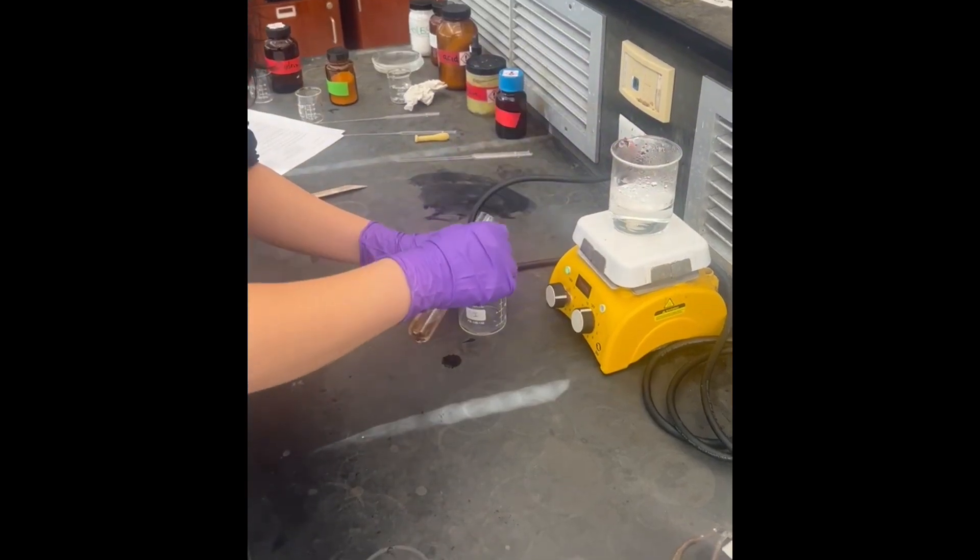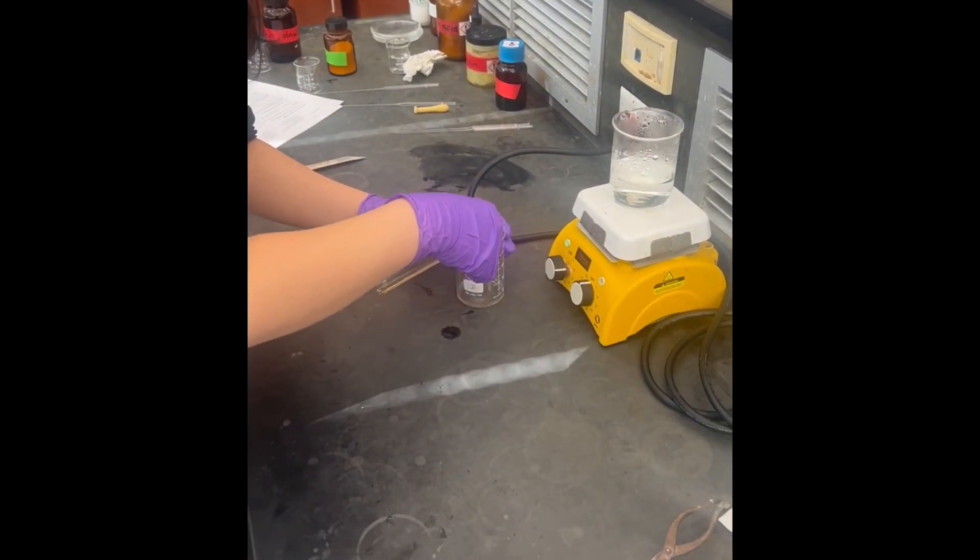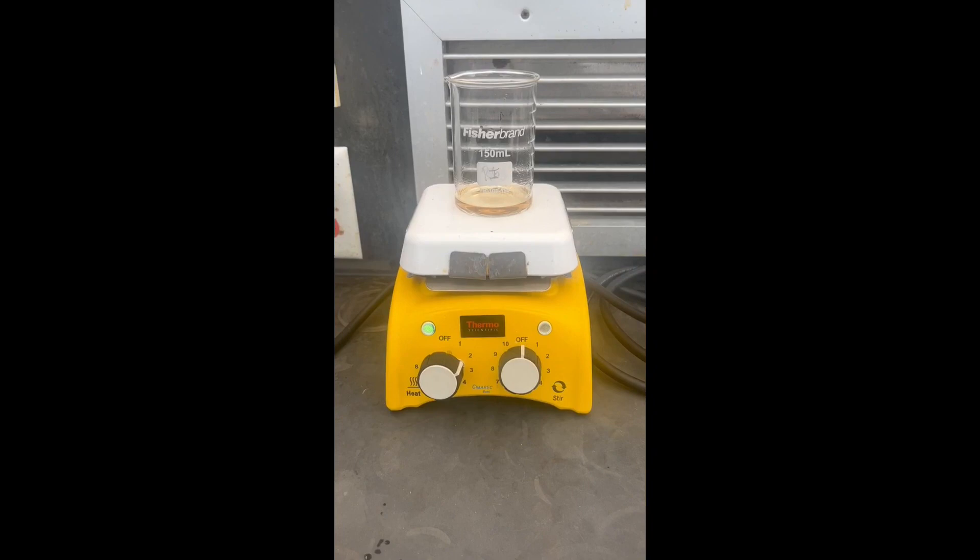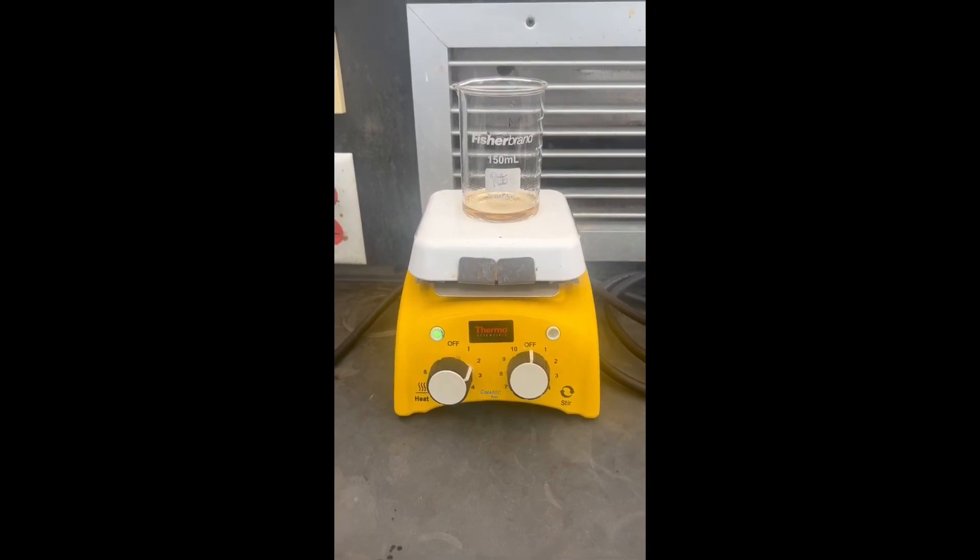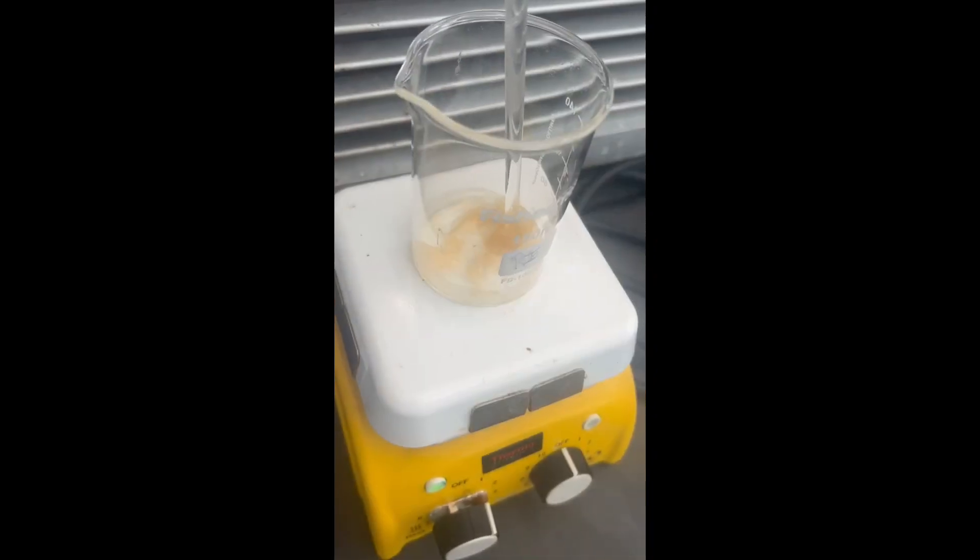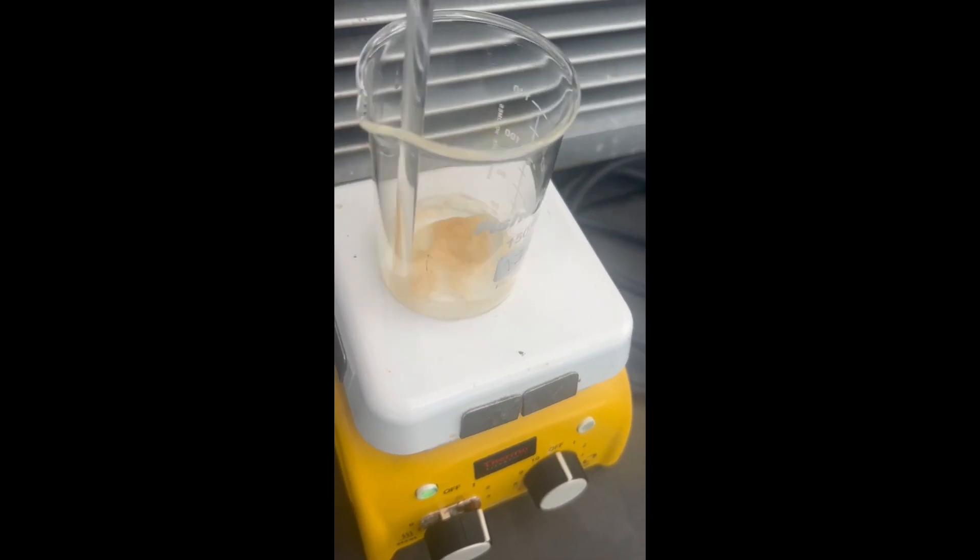Pour contents into a 150 milliliter beaker and place it on a hot plate for the alcohol to evaporate and the remains to become thick and sticky. Do not overheat or it will char.